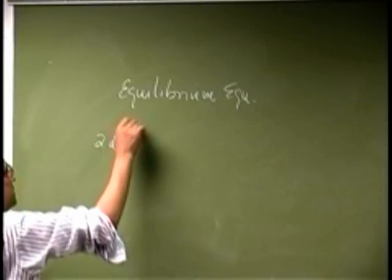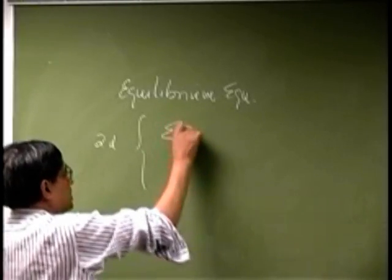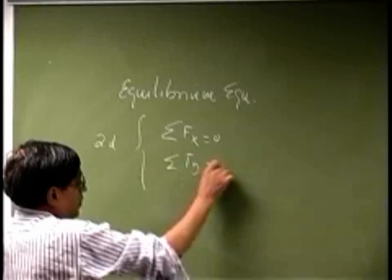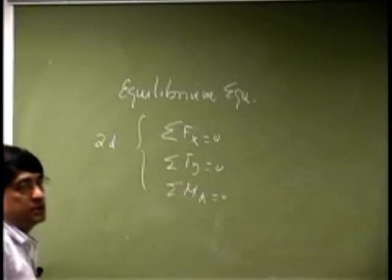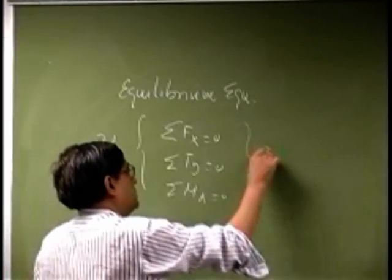In two dimensions, the equations are sum of forces along X equals zero, sum of forces along Y equals zero, and moment equals zero. So basically, you're looking at three equations.